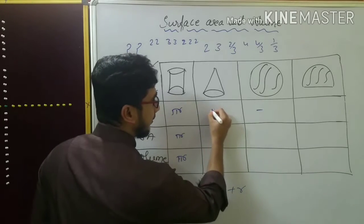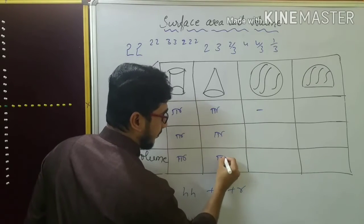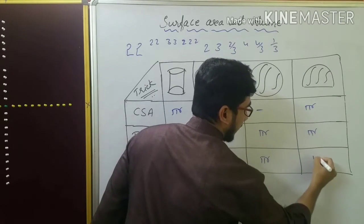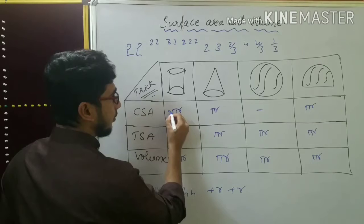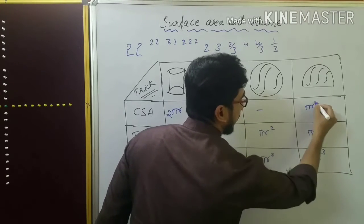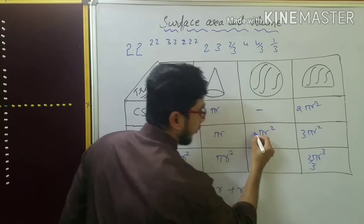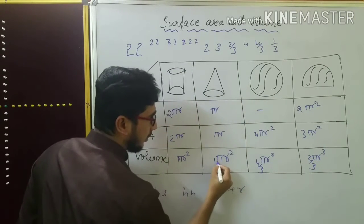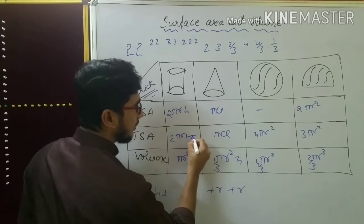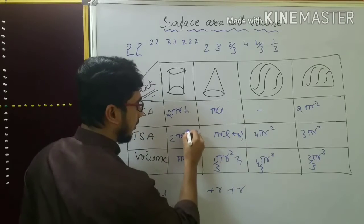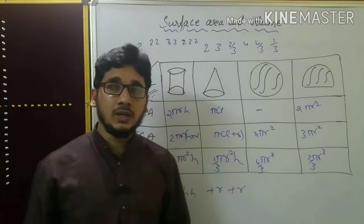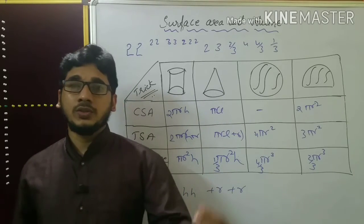Everywhere I will write pi r, pi r. Now: two, two, square, square, cube, cube, square, square, square, two, three, two by three, four, four by three, one by three, h, l, h, l, h, h plus r, plus r. I have written all the formulas. You can also write all these formulas within 30 seconds.